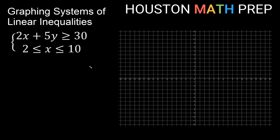Something a little different: 2x plus 5y is greater than or equal to 30, and a compound inequality 2 less than or equal to x less than or equal to 10. Looking at the compound inequality first, x equal to 2 gives a vertical line through x equals 2, and x equal to 10 gives a vertical line through 10.